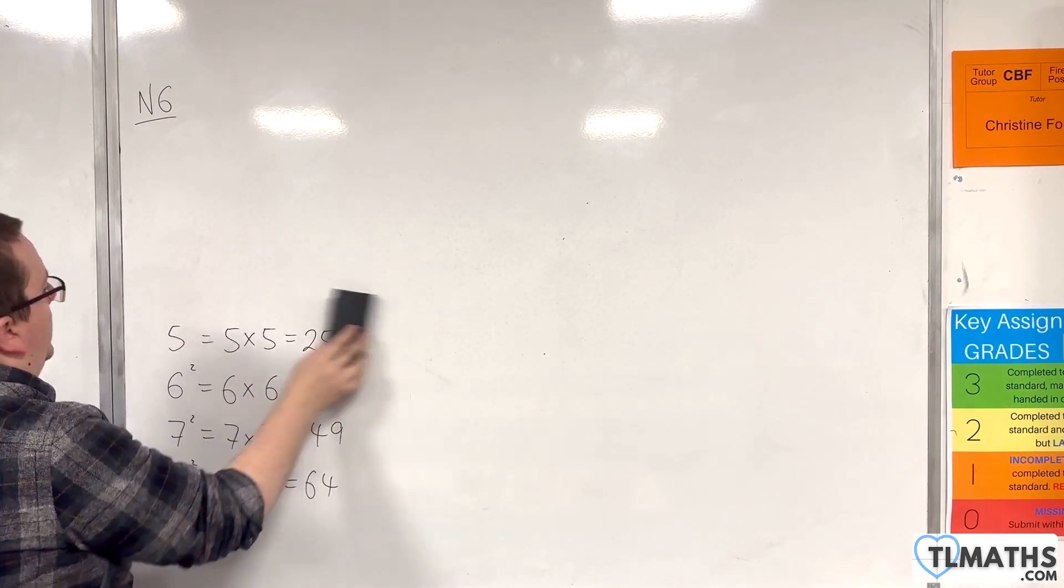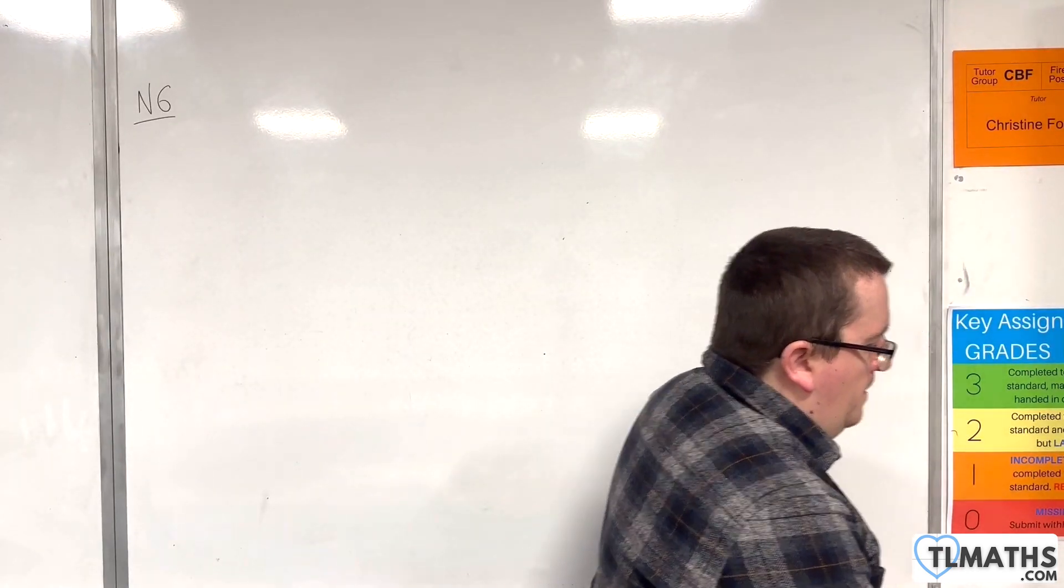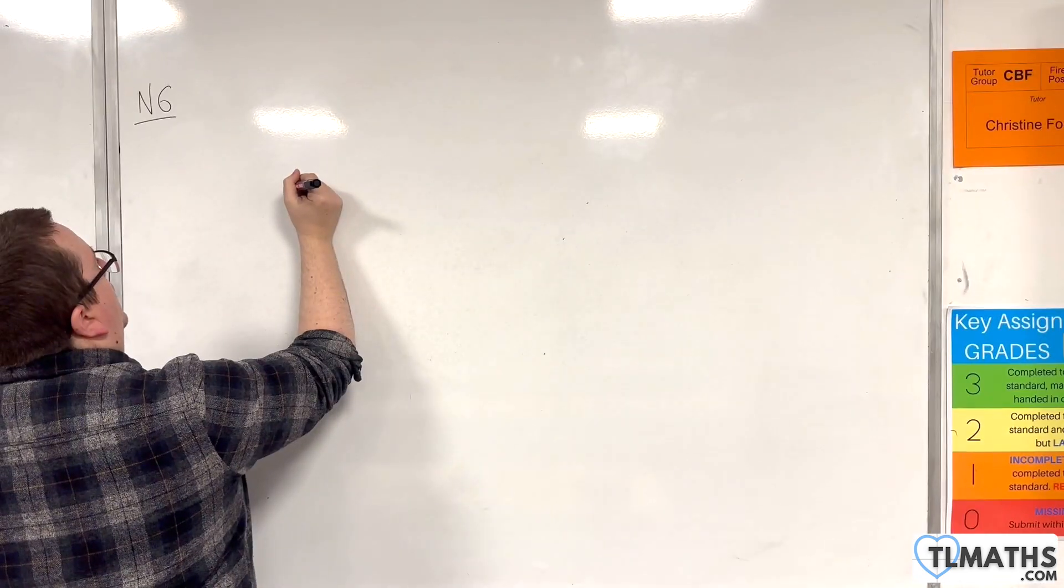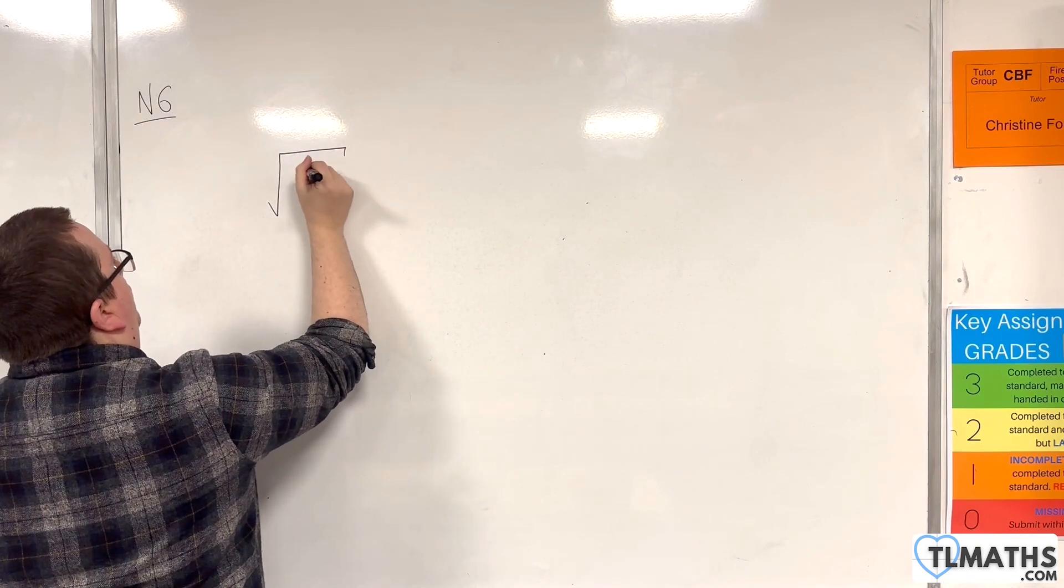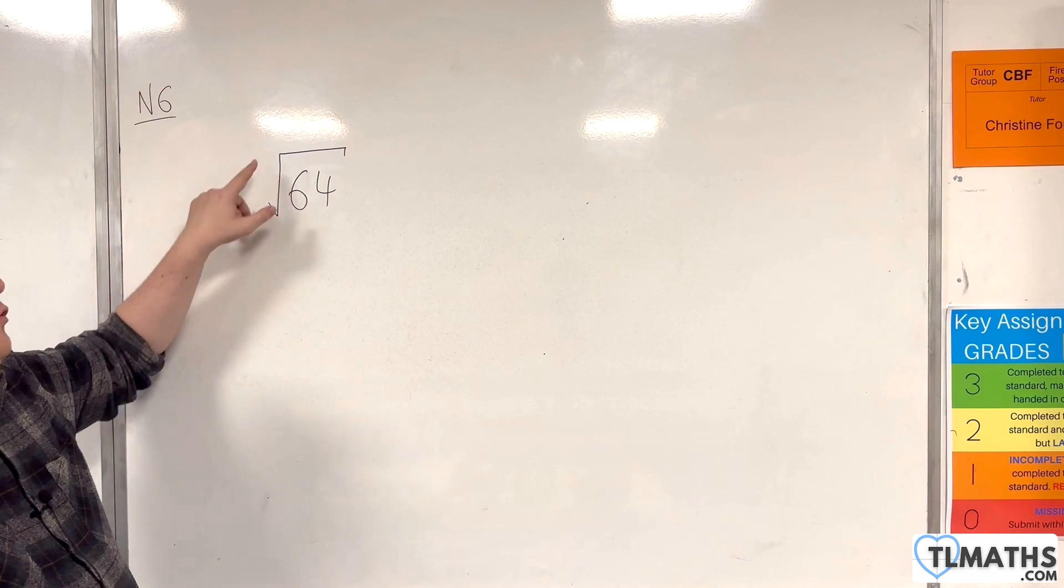Now, square roots are essentially going the other way. The notation for this would be the square root of 64. Now, this is the square root symbol. Looks so much like a division symbol.